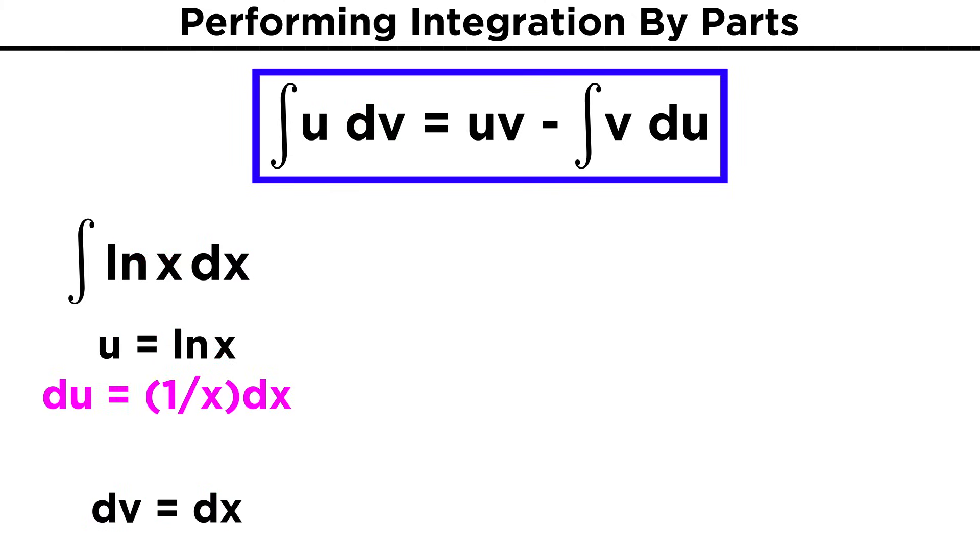When we write out the answer, we will also need du, which is the derivative of u, and that's one over x dx. And we need v, which is the antiderivative of dv, so from dx we get x. Now we just use the formula. The product uv will be the natural log of x times x, or x ln(x).